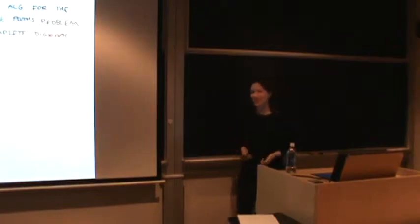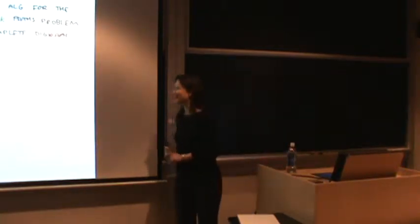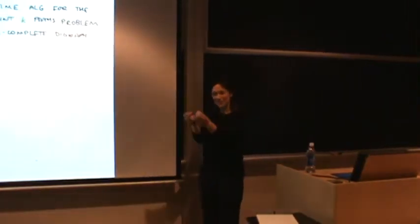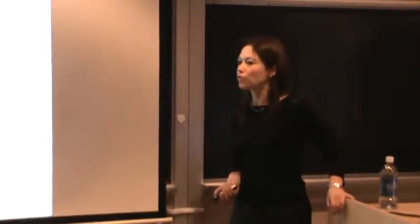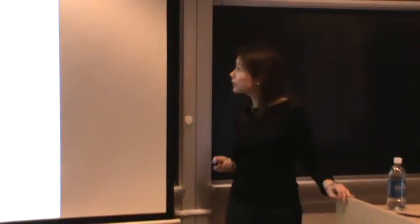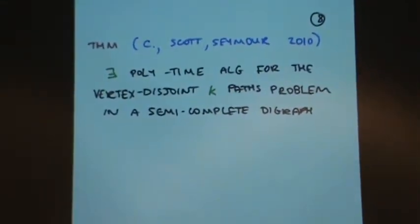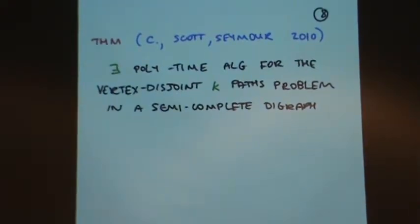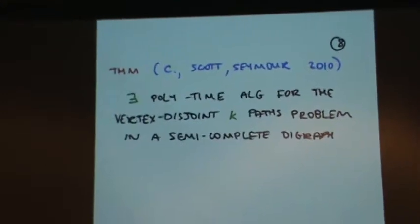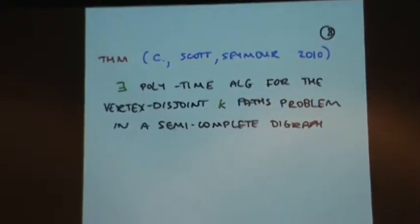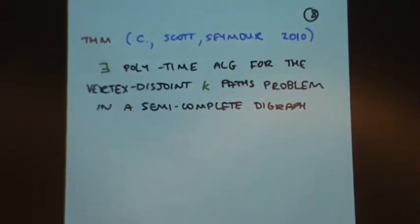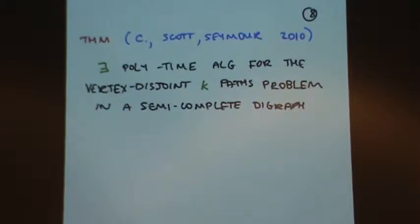But the algorithm is sort of nothing like the edge disjoint one. There is a dynamic programming step there. We tried pretty hard to find something to identify, but for edge disjoint it is much faster polynomial. From now on what I'm going to do is talk a little bit about the proof of this theorem. We actually just finished writing the paper, so I think it's actually true.